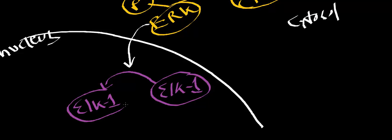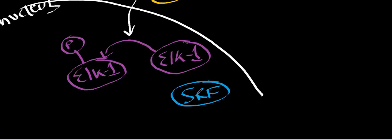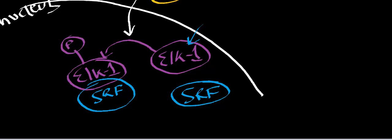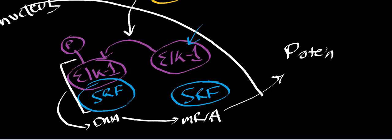ELK1 acts as a transcription factor. When ELK1 is phosphorylated, it dimerizes with another protein called SRF. In the non-phosphorylated state it's separate from SRF, but as soon as ELK1 gets phosphorylated, ELK1 dimerizes with SRF and you get a complex. This complex binds to the DNA, and then you get mRNA — it does transcription — and ultimately you get a protein. ELK1 and SRF are transcription factors; they dimerize, bind to the DNA at specific segments, and induce transcription of certain genes.